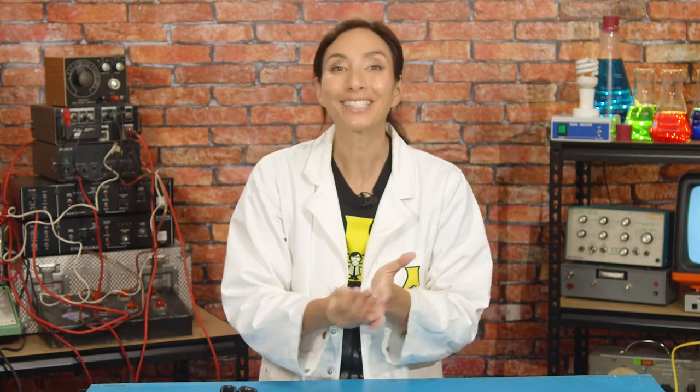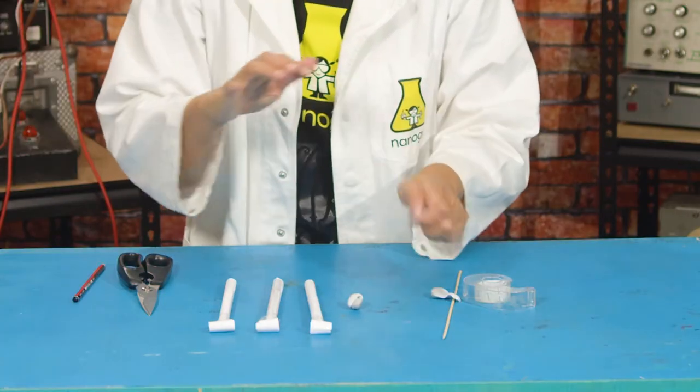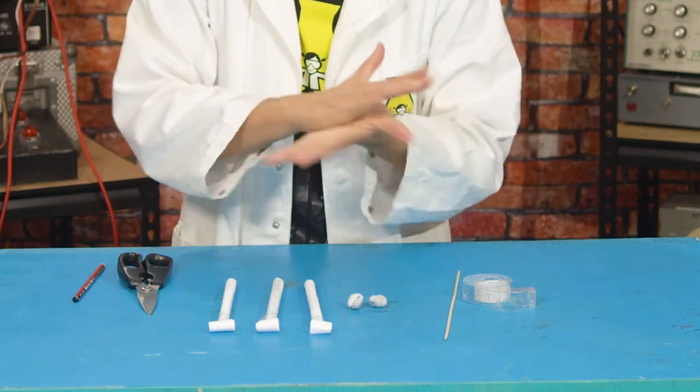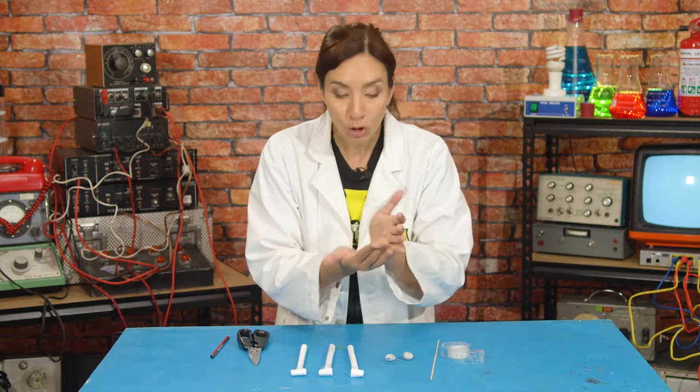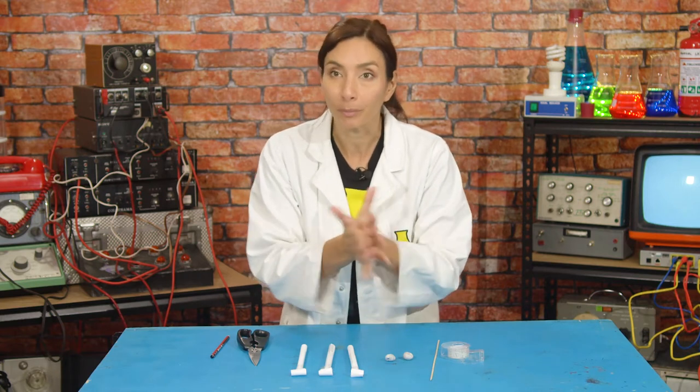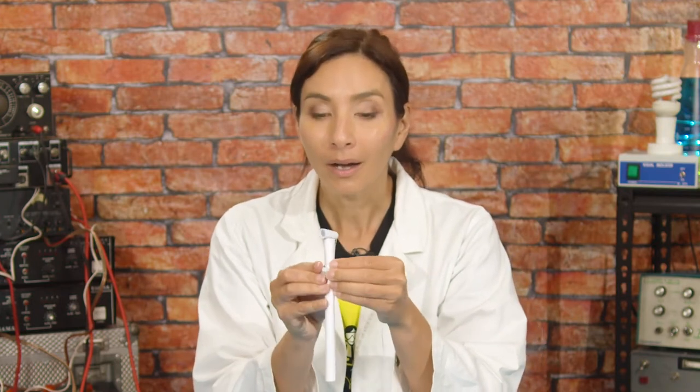Next you're going to need to add some weights or bobs. So divide your plasticine or your blu-tack into three equal sized balls. We want the same weight on all of our rods. I think it helps if you turn these into sausage shapes so you can wrap them around your rod. So take your first rod and you're going to wrap the weight around it evenly towards the top of your rod like this.